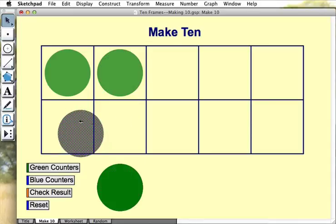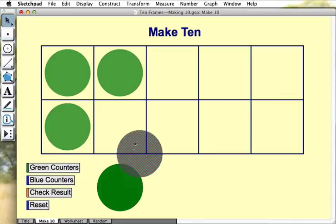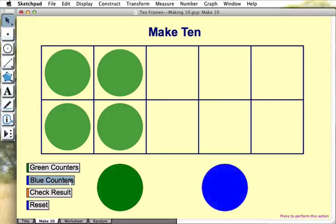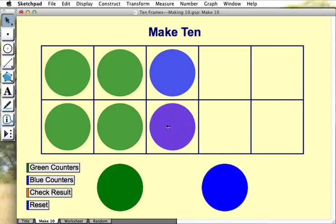Working in pairs, a student might begin by dragging any number of green counters that she likes into the frame. Her partner then presses blue counters and drags enough blue counters into the frame to completely fill it.